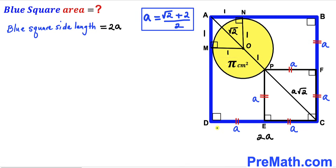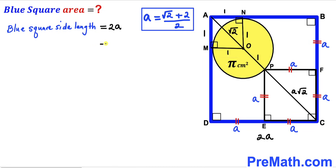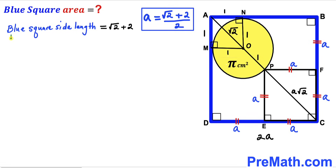Now, the side length of the big blue square is 2 times a. Substituting a equals (√2 + 2) over 2: side length equals 2 times (√2 + 2) over 2. The 2s cancel, so the big blue square side length turns out to be √2 plus 2.